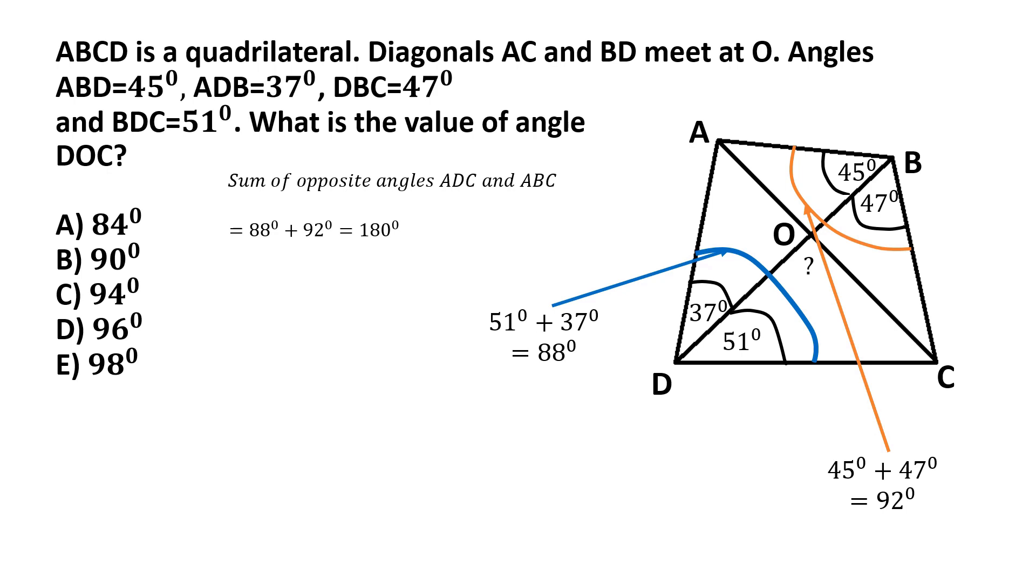And this is the critical part of the problem: realizing that since the sum of the opposite angles of the quadrilateral is equal to 180 degrees, then this quadrilateral is a cyclic quadrilateral, meaning that the points A, B, C and D will lie on a circle. Let's draw out that circle.